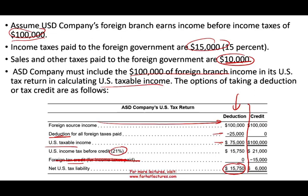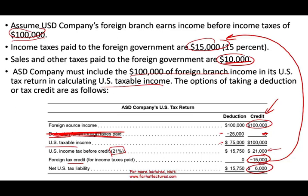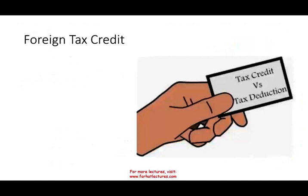Now let's use the credit option. Foreign source income is $100,000; no deduction is taken. U.S. tax before credit is 21 percent of $100,000, so you owe $21,000 to the U.S. government. The U.S. government will give you a $15,000 tax credit for the income taxes paid to the foreign government, leaving a liability of only $6,000. Clearly, taking the tax credit is much more beneficial than the $25,000 deduction. The tax credit gives you dollar-for-dollar reduction — you cannot take both; you must choose one.